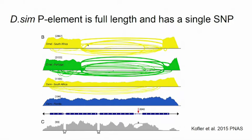In simulans, the P elements are young and healthy — they are full length. Whereas in melanogaster, they are already degraded, with lots of internal deletions. They are old and sick. But the simulans ones are very young and healthy.